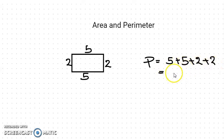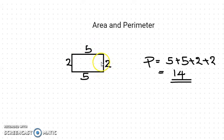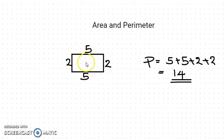2 plus 2 is 4, and 4 plus 10 is 14. So that is the perimeter of this rectangle. We can find the perimeter by adding all the sides of a figure.